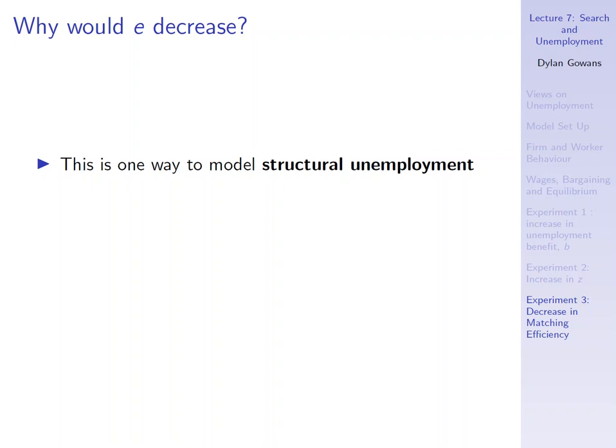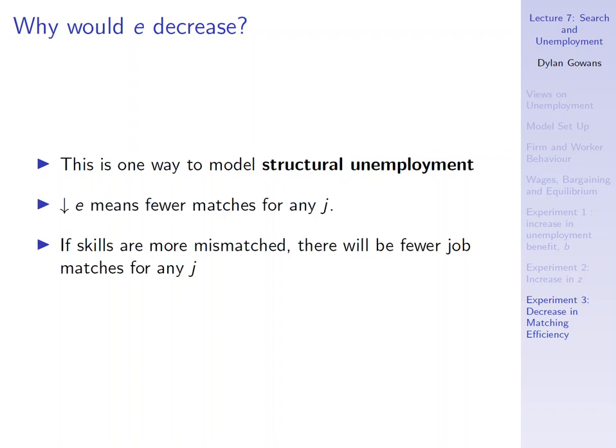We could expect to see fewer matches for the same A and Q in a case where skills were very mismatched. There might be a lot of searching workers and a lot of searching firms, but if the skills that those firms need are different than the skills that the workers have, then we would expect to see fewer matches. If I'm searching and the only jobs available are carpentry jobs, and I personally have no skills in carpentry, well then I'm very unlikely to match. So a decrease in E could be because of this increase in a skills mismatch.